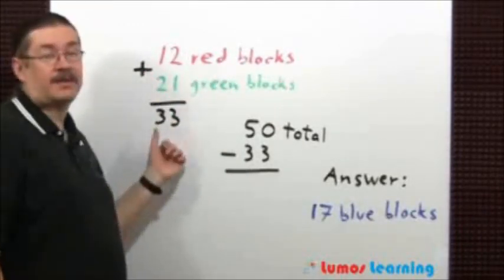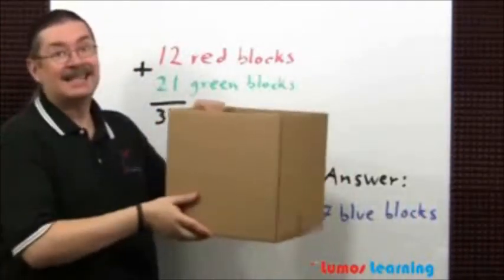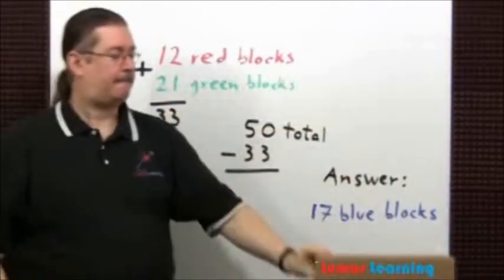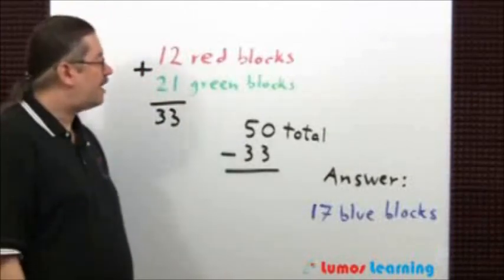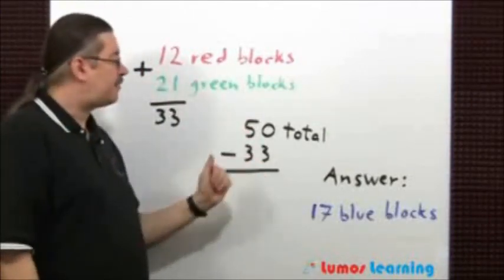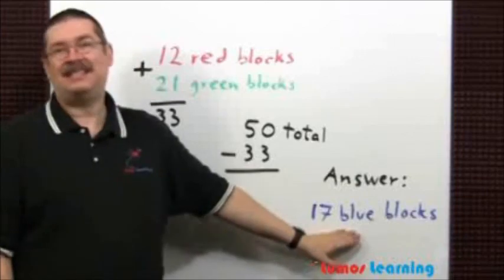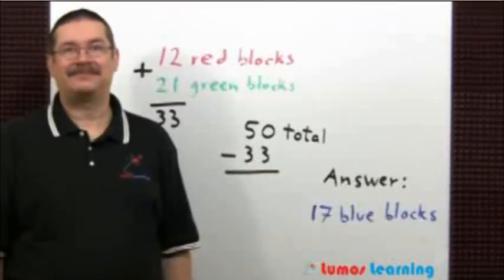We're going to get 33. Now, we also know there are a total of 50 blocks. So, if you go ahead and subtract 50 minus 33, you're going to get the answer of 17 blue blocks. We'll see you next time.